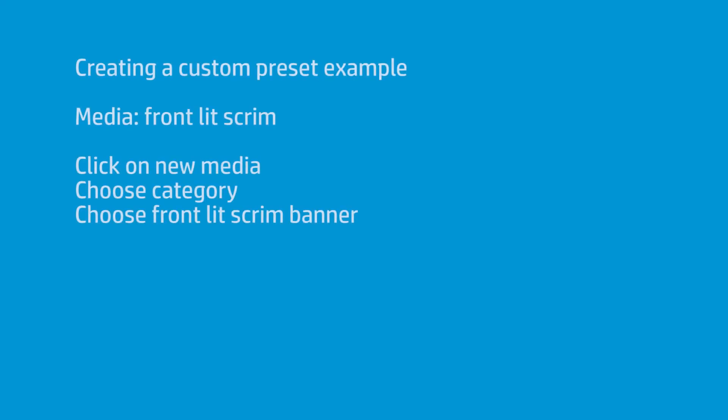It's a few simple steps. You're going to go to the panel and you're going to create a new media. When you create the new media, it's going to ask you a category. What you're trying to do is pick a category that makes sense for what it is that you're printing on. So if you have a scrim banner, obviously you would choose scrim banner. Within scrim banners there's backlit and there's frontlit. Let's assume you have a frontlit scrim banner — that's what most people have — so you would choose frontlit scrim banner from the panel.